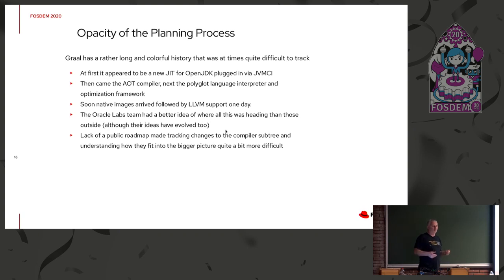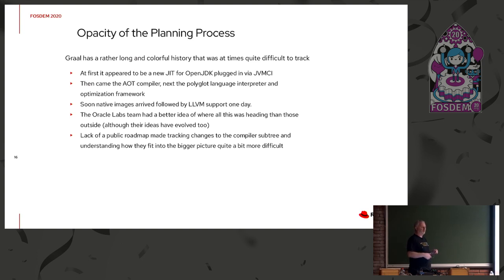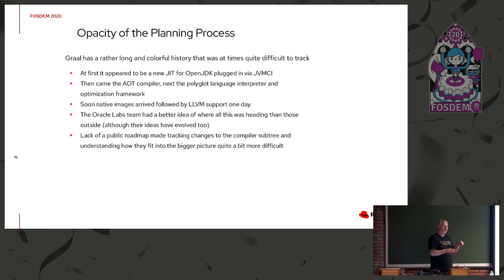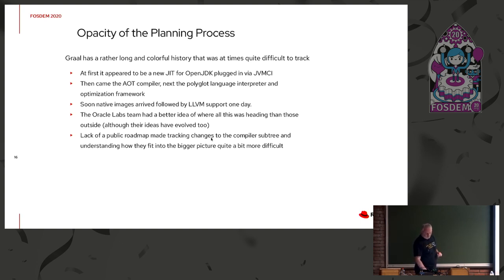The other problem was that what this product was and where it was going was quite difficult for us to see. Graal has got a very long history, relating back to Maxine and Jikes. We gradually began to understand it wasn't just a JIT compiler and an AOT compiler - it had all these other uses as well. Part of that was us not reading the right things, but also the roadmap that Oracle Labs had for the product was not clear anyway - they had different ideas about what would be its key value proposition. There was no public roadmap, because it was a private project trying to become an open source project.